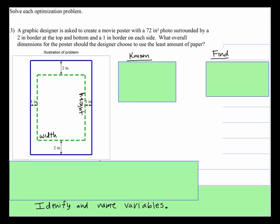A graphic designer is asked to create a movie poster. Inside the movie poster is a 72 square inch photo surrounded by a 2 inch border at the top and bottom and a 1 inch border on each side. What overall dimensions for the poster should the designer choose to use the least amount of paper?